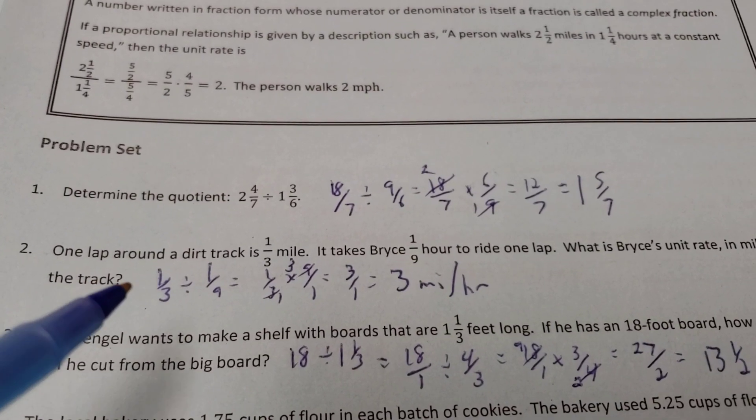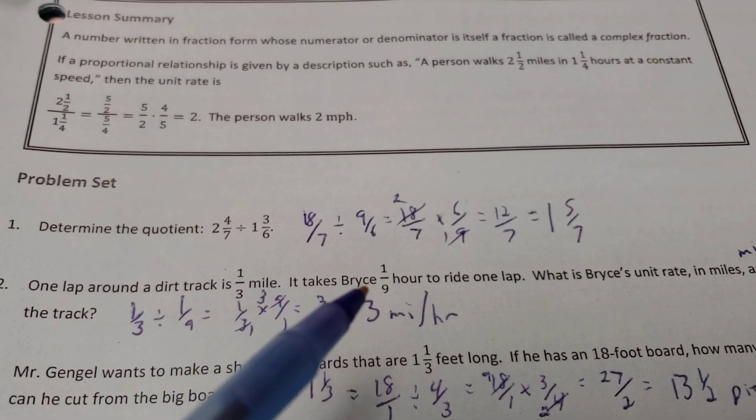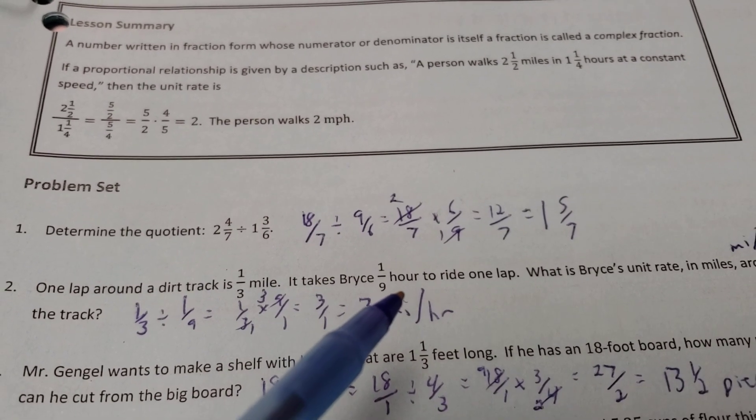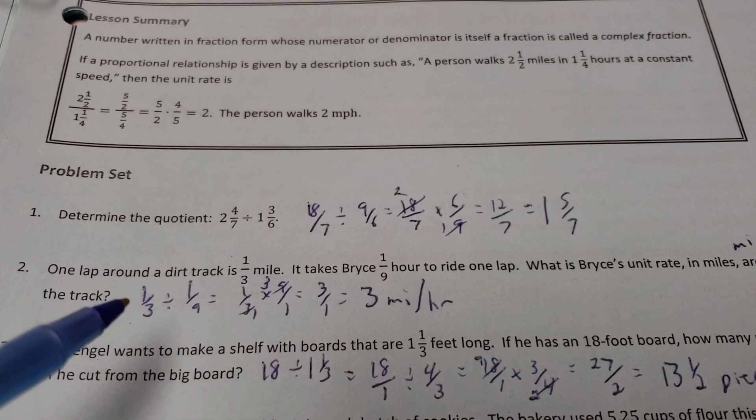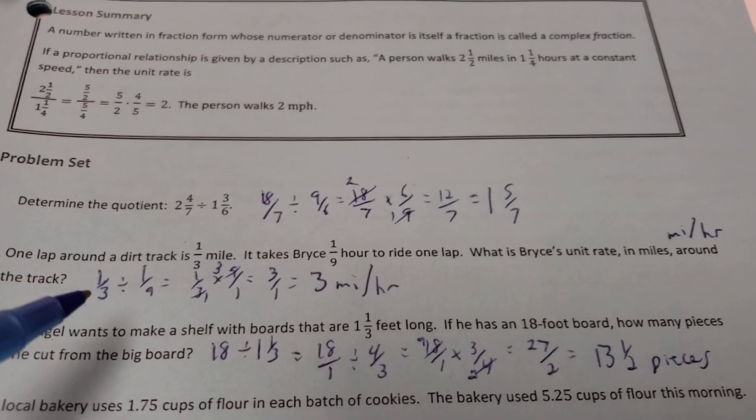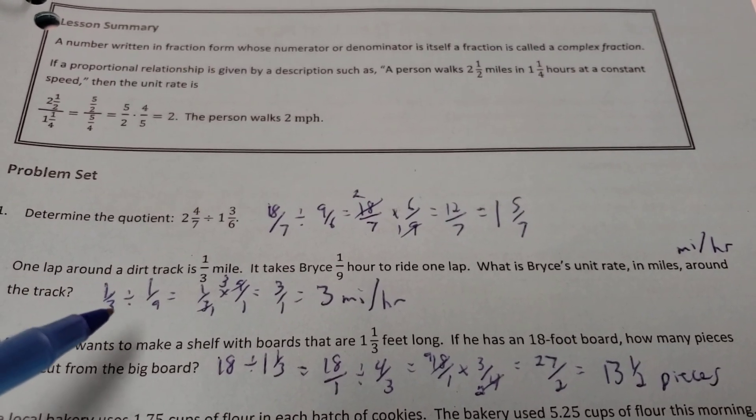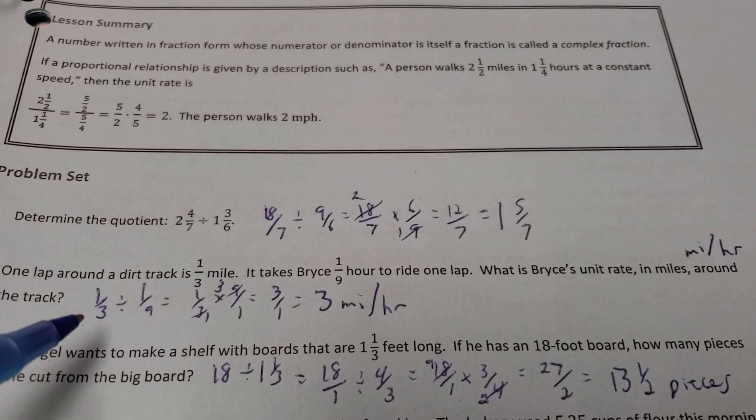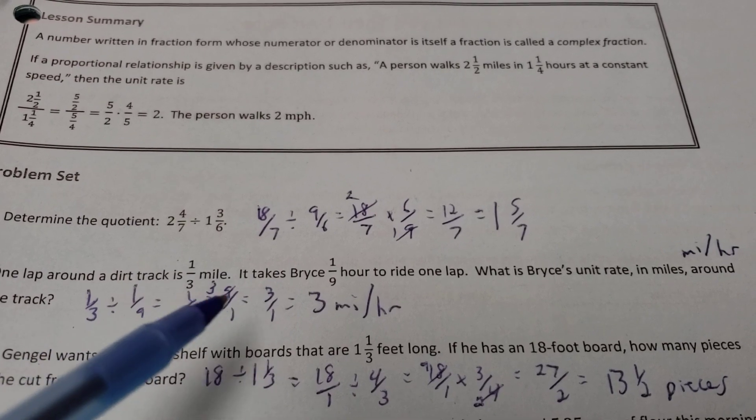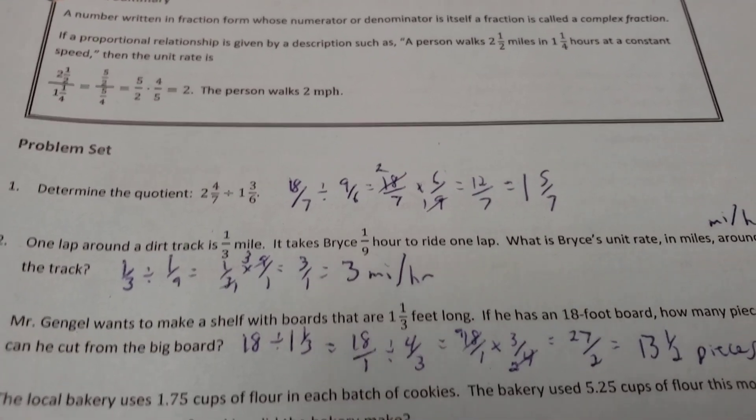Let's see, number 2. One lap around the dirt track is 1/3 of a mile. It takes Bryce 1/9th of an hour to ride one lap. What's Bryce's unit rate in miles around the track? Well, we don't know how many miles per hour this is. All right. So, take the distance divided by the mileage, or divided by time, I should say, 1/3 divided by 1/9th. Keep, change, flip, and we get 3 miles per hour.